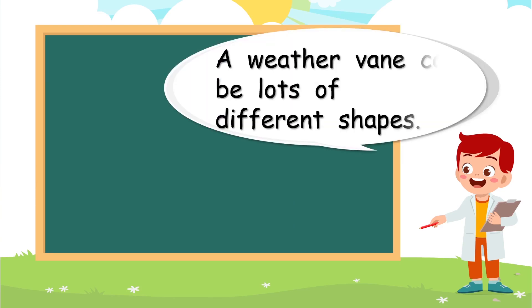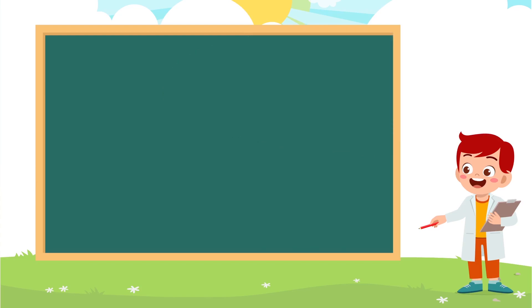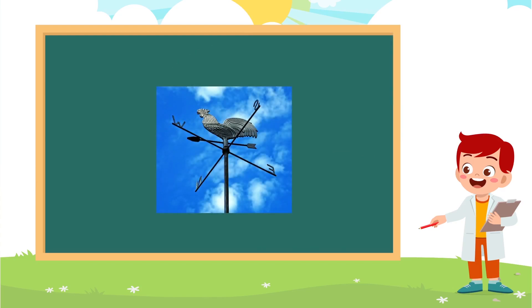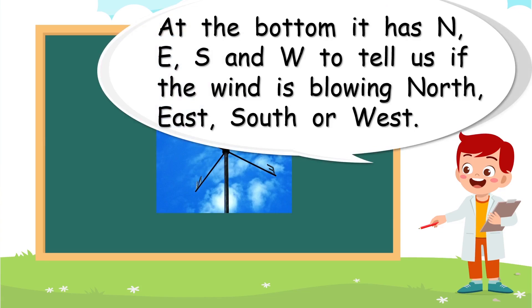A weather vane can be lots of different shapes. This one's a chicken. But can you see the arrow under the chicken? That's pointing the wind direction. At the bottom, it has N, E, S, and W to tell us if the wind is blowing north, east, south, or west.